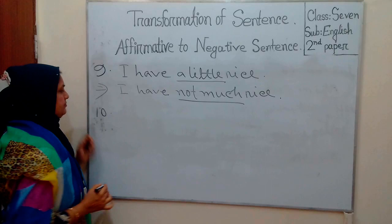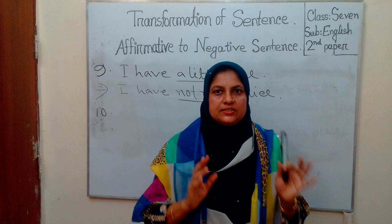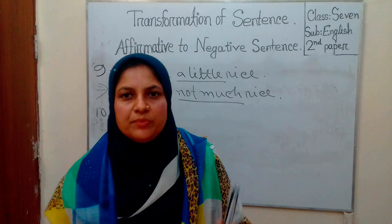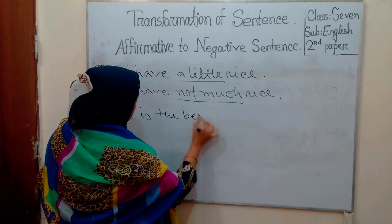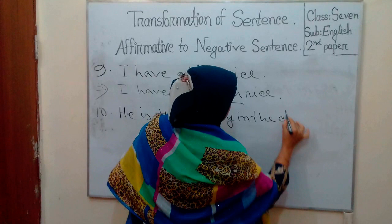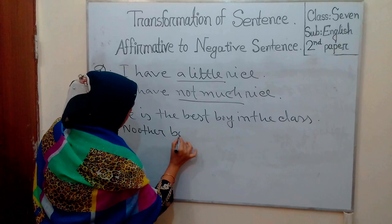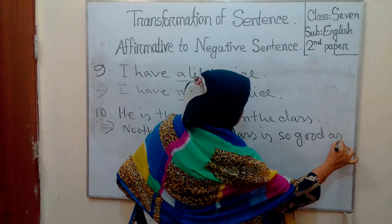Rule 10. If there is a superlative degree in the affirmative sentence, it should be changed using 'no other' plus the noun part of the superlative degree, plus 'but so' plus the positive adjective, plus 'as' plus the subject. For example: 'He is the best boy in the class.' Negative sentence: 'No other boy in the class is so good as he.'